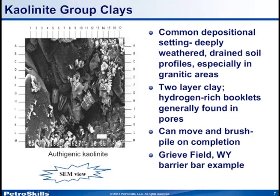For example, authigenic kaolinite commonly forms in a deeply weathered soil profile — a well-drained soil such as a lateritic soil in the tropics — and is especially prevalent in granitic areas. It's a two-layer clay structure containing hydrogen-rich booklets or cards stacked up in the middle of pores. In the photograph, you can see a pore throat that is largely devoid of authigenic kaolinite. Kaolinite can move and brush-pile on completion with the introduction of fluid into the pore system. This example is taken from Greve Field in Wyoming, which is thought to be a barrier bar.